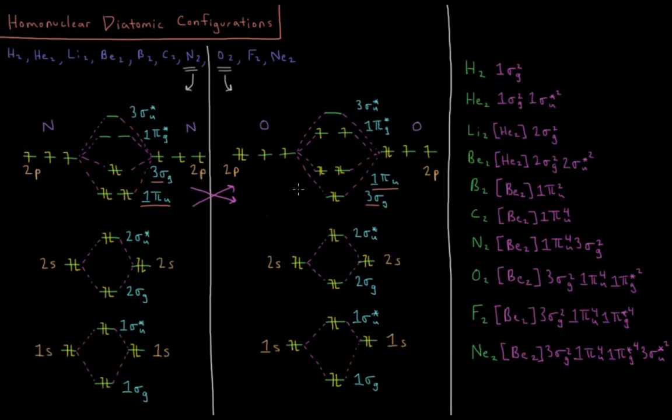But that's why that shift happens. It's mainly a shielding effect. And that's kind of just something you have to memorize, just that there are two different diagrams and that the switch occurs between nitrogen and oxygen, and that oxygen is the one that puts the 3sσg below the 1πiu.